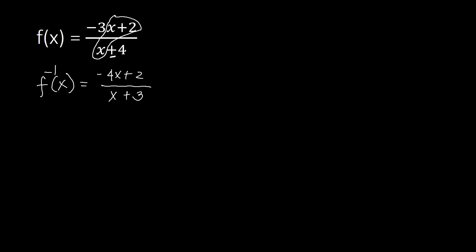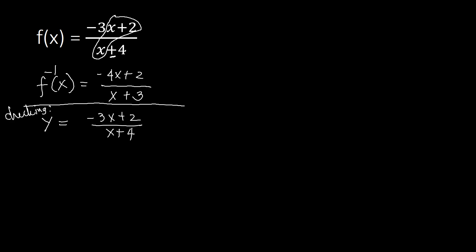That is the shortcut for finding the inverse of that rational function. Now let's check if we have the correct answer using the long process. Step one: change f(x) to y, so y equals negative 3x plus 2 over x plus 4.